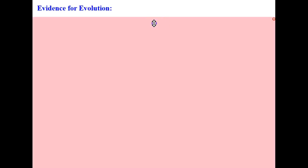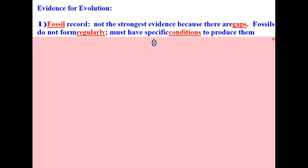Let's go ahead and get started with the fossil record. The fossil record is not the strongest evidence because there are gaps. This is because fossils do not form regularly. They must have specific conditions in order to produce them.